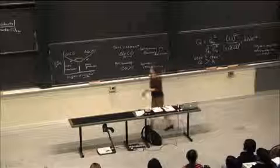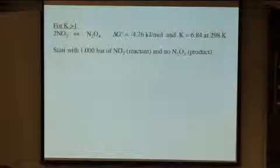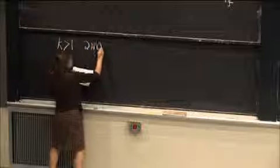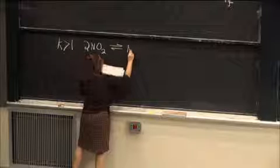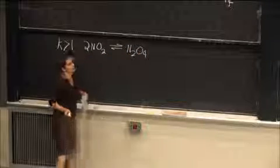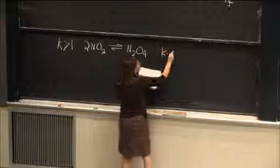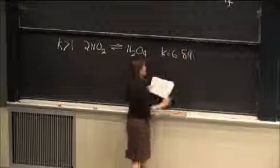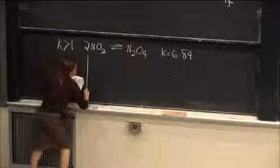So let's look at an example of that when K is greater than 1. I have the equation up there, and I'll write it here as well. So we have 2NO2 in double arrows N2O4. So we have a K value here of 6.84. So that's greater than 1. So let's think about this reaction.